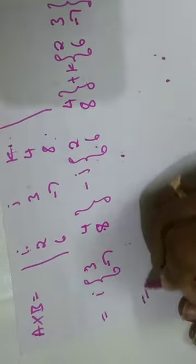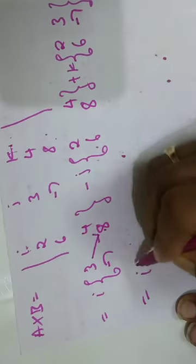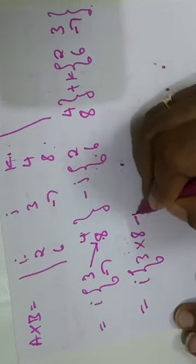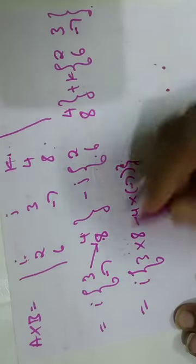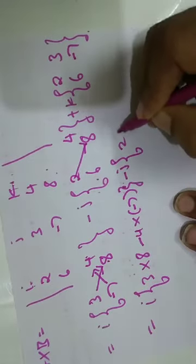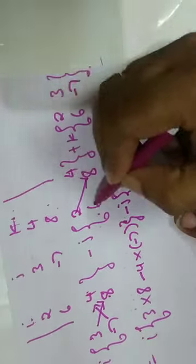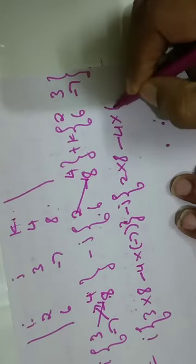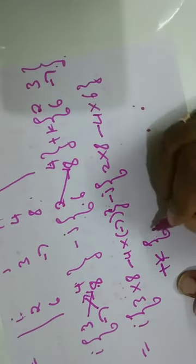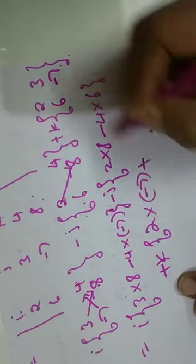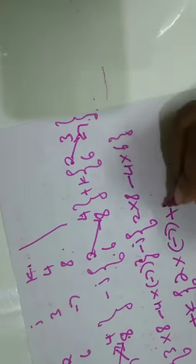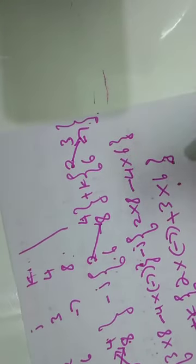Now expand each 2×2 determinant. For i: i × (3×8 − 4×(−7)). For minus j: −j × (2×8 − 4×6). For plus k: k × (2×(−7) − 3×6). Wait, it should be 2×(−7) minus 3×6. This is how the full determinant expansion is computed.